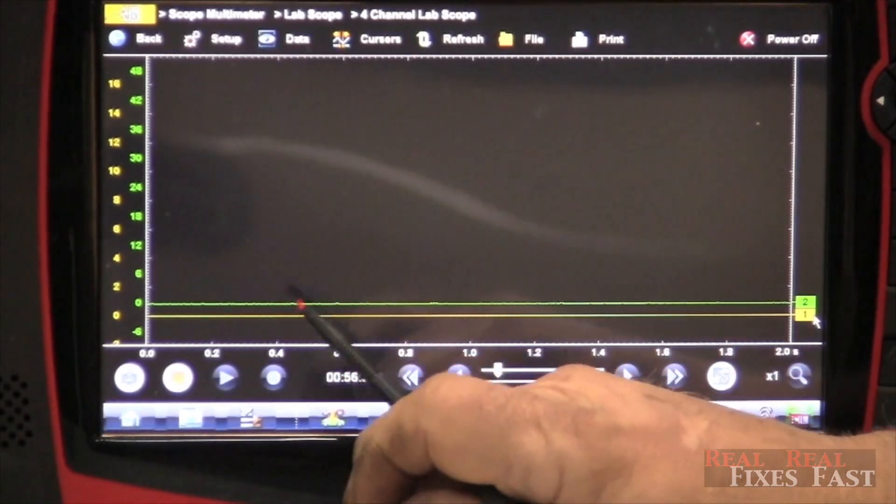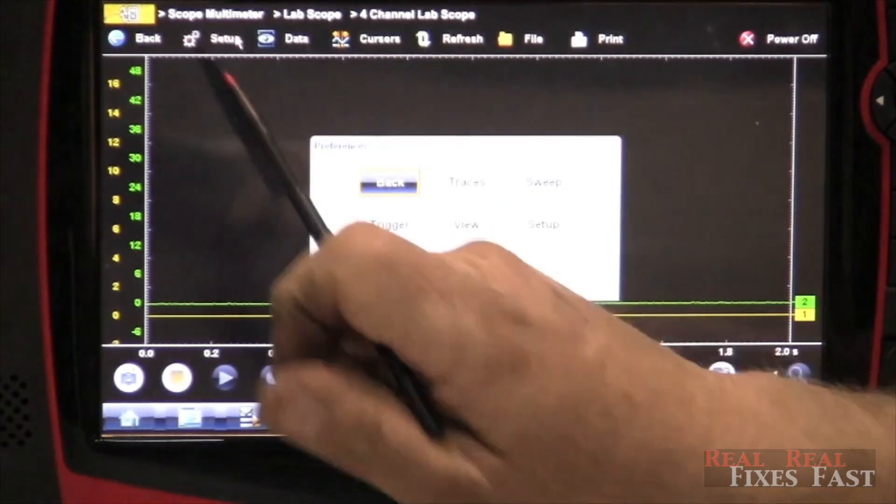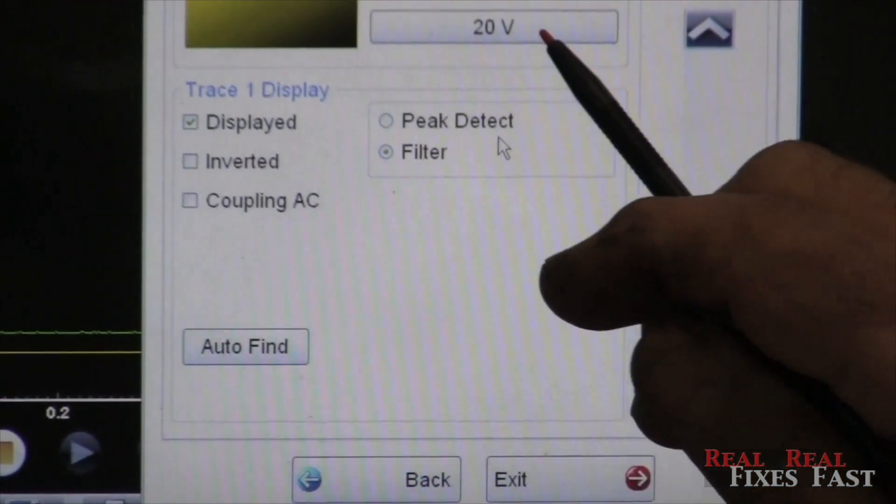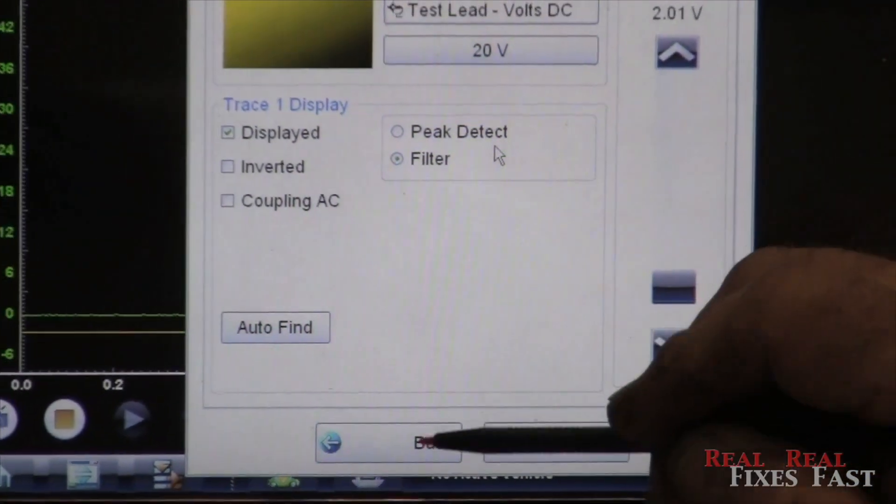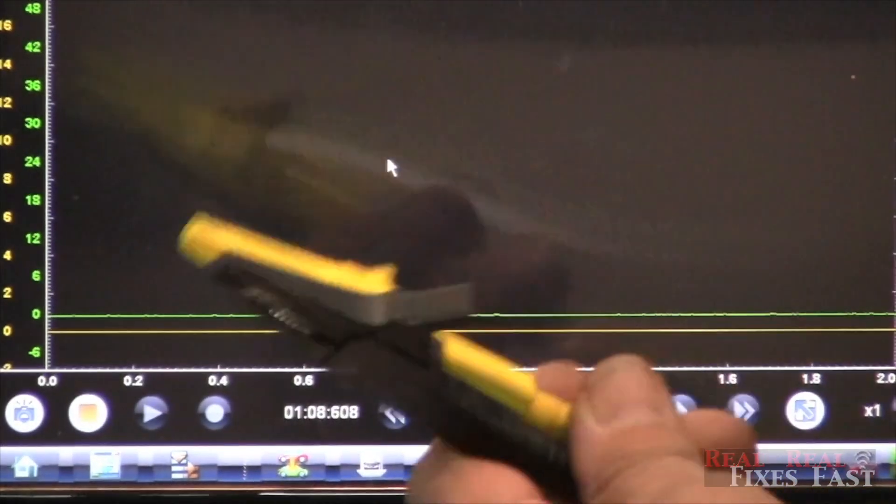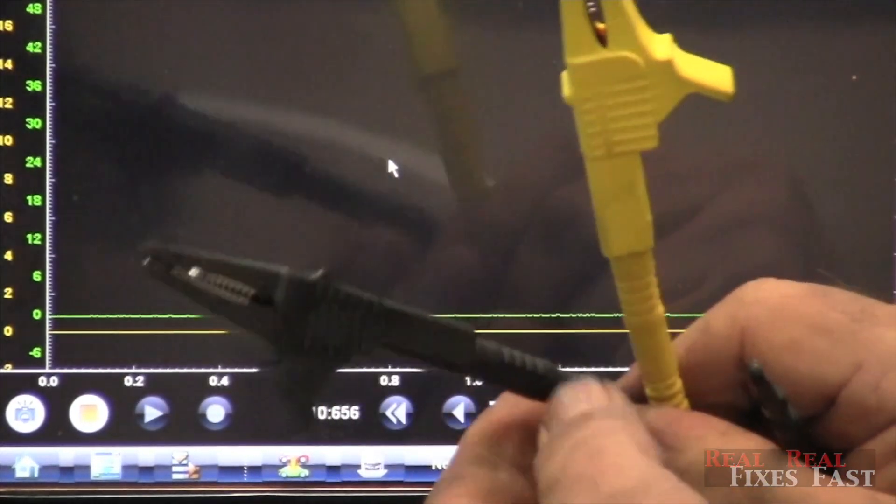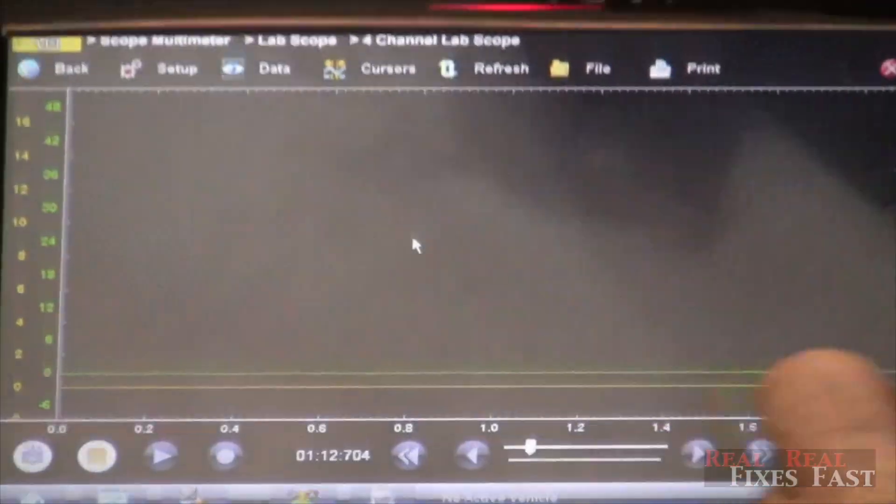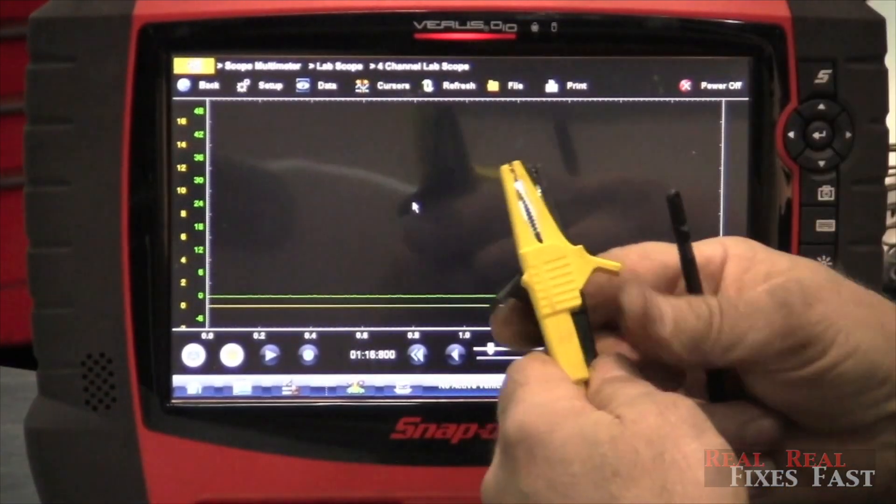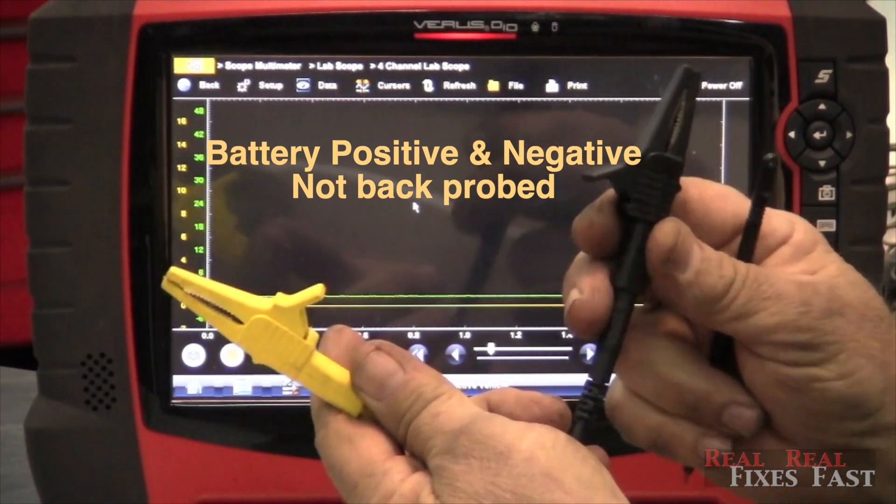How you set your scope up for this. I'm going to use two channels. So I'm going to go into setup and on trace one I want to do a voltage drop, so I'm going to set it up for 20 volts. And on trace one I'm going to use my regular clamps for trace number one. It's going to be plugged in here trace number one. And I'm simply going to put this around the battery positive and battery negative.